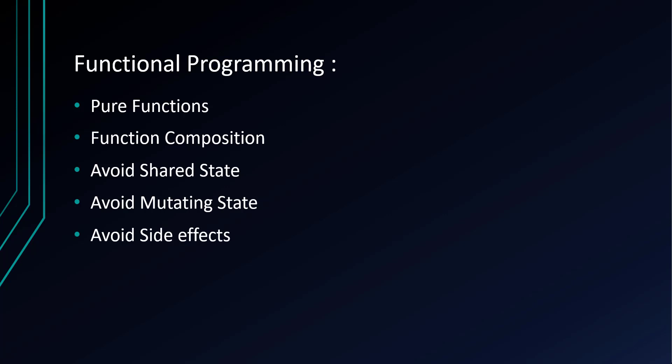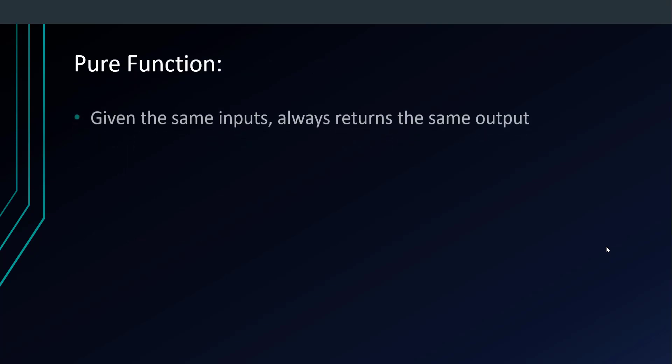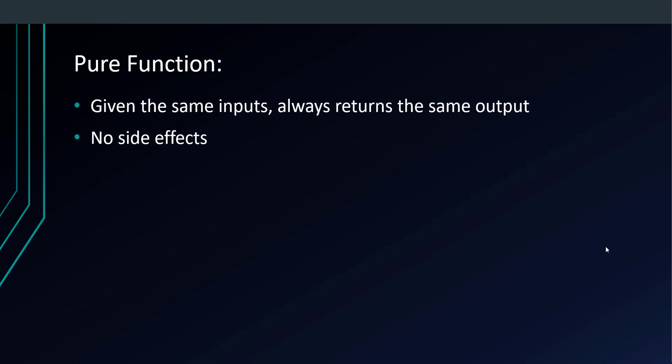A pure function is a function which, given the same input, always returns the same output and has no side effects. Pure functions have a lot of properties that are important in functional programming, including referential transparency — you can replace a function call with its resulting value without changing the meaning of a program.